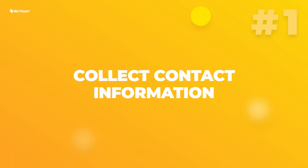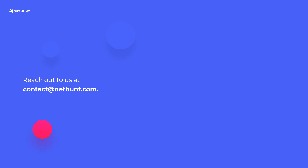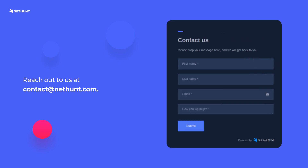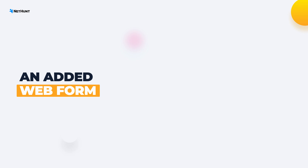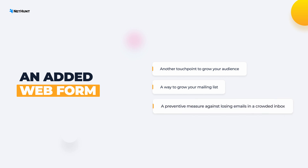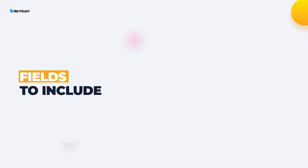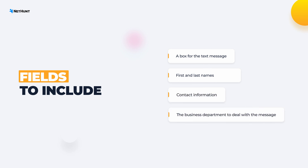First: collect contact information. There's a huge difference between a plain email address and a dedicated contact form. Even though they serve the same purpose of letting your website visitors contact you, adding a separate 'contact us' form acts as another touchpoint that grows your audience. Moreover, it gives you an opportunity to grow your email list and make sure no contact requests get lost in your crowded inbox. Fields to include: a box for the text message, first and last names, contact information, and the business department to deal with the message.